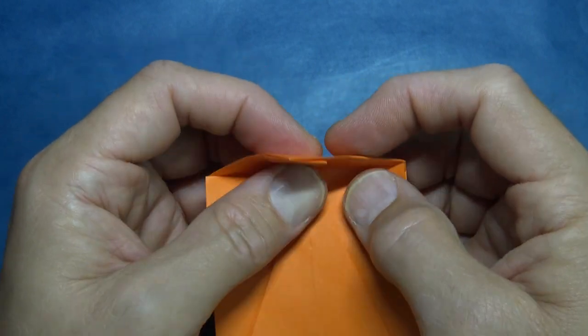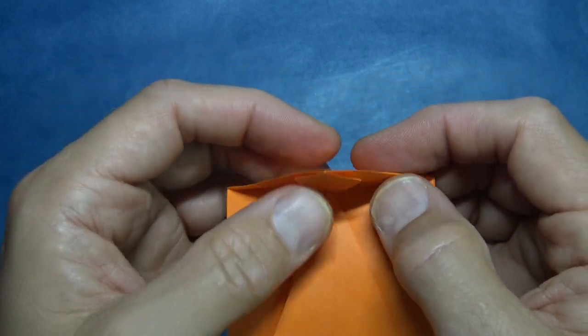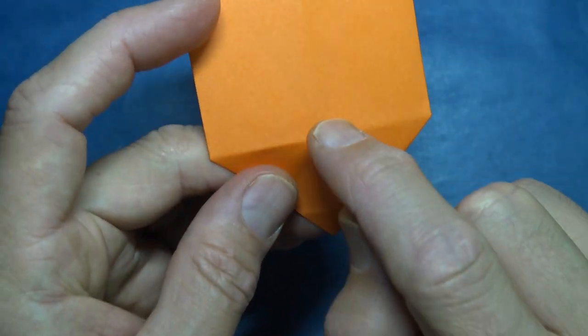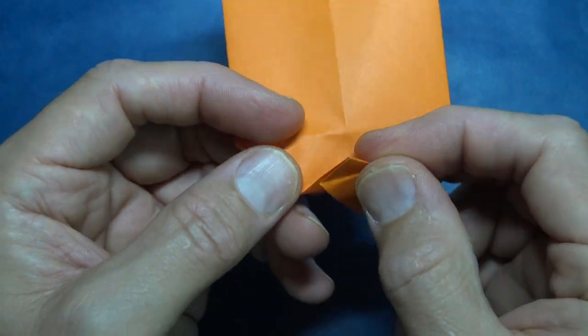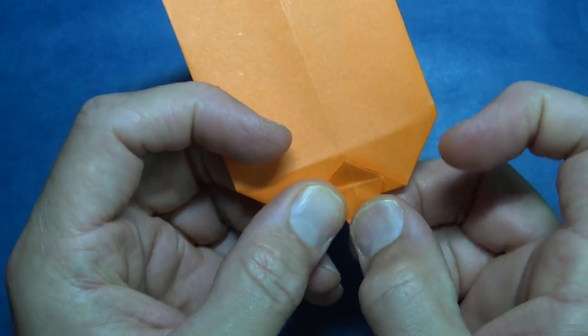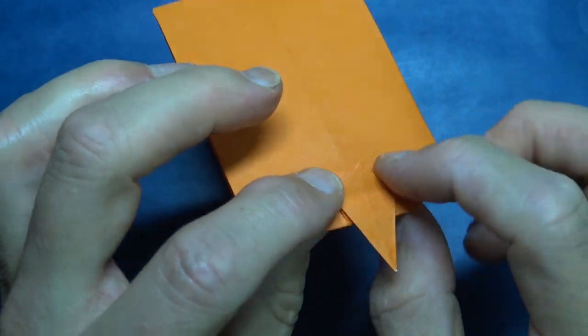And fold this down like that. And unfold. Turn over and fold this corner to this point, letting the flap swing down. So this is the stem. Turn over.